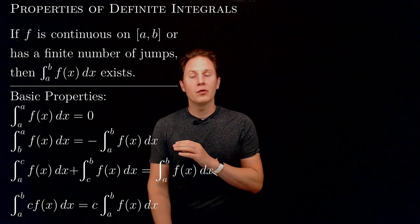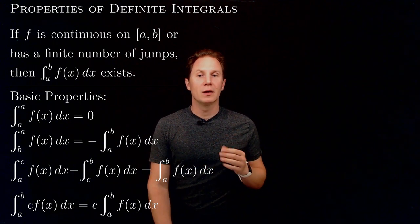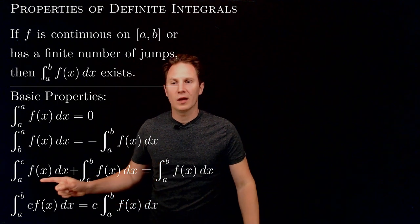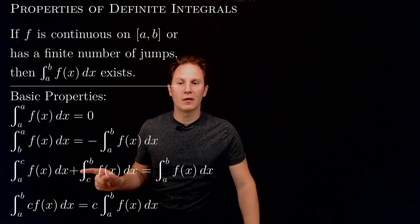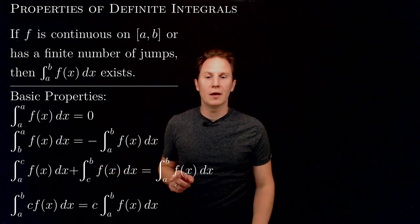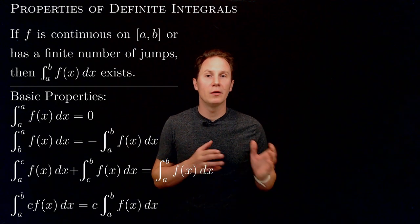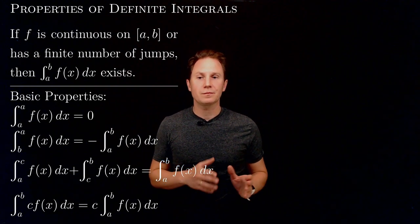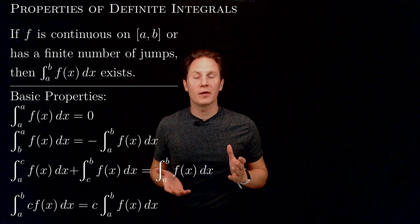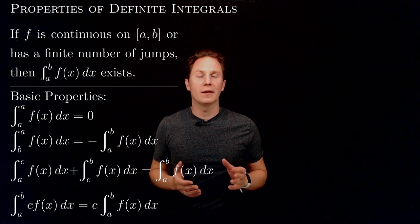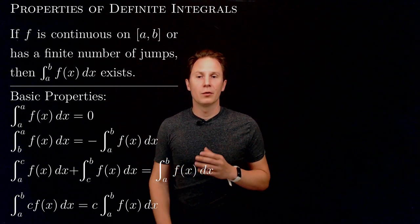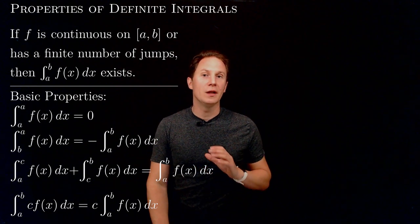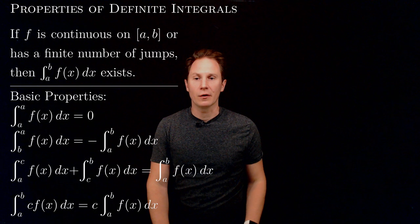If we introduce a point between a and b called c, then we can say that the definite integral from a to c plus the definite integral from c to b is equal to the definite integral from a all the way to b. This expresses the simple fact that areas are additive, but you could also view it as the sum law of limits in action.